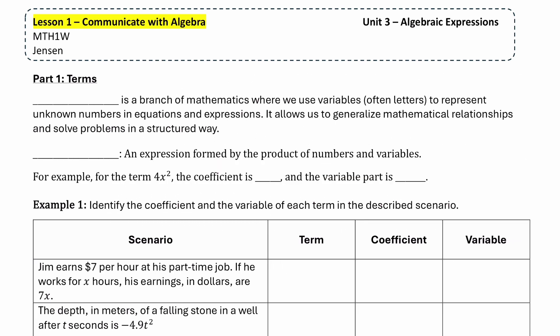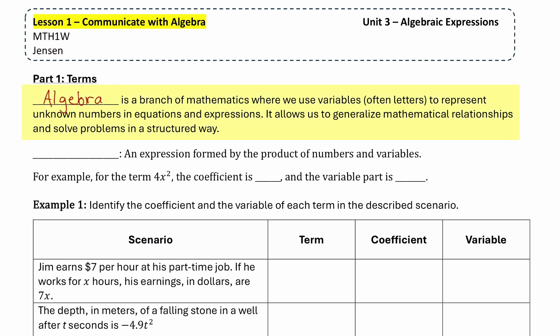So let's start with part one, where we look at terms. Algebra is the branch of mathematics where we use variables, which are often letters, to represent unknown numbers in equations and expressions. It allows us to generalize mathematical relationships and solve problems in a structured way. A term is an expression formed by the product of both numbers and variables.